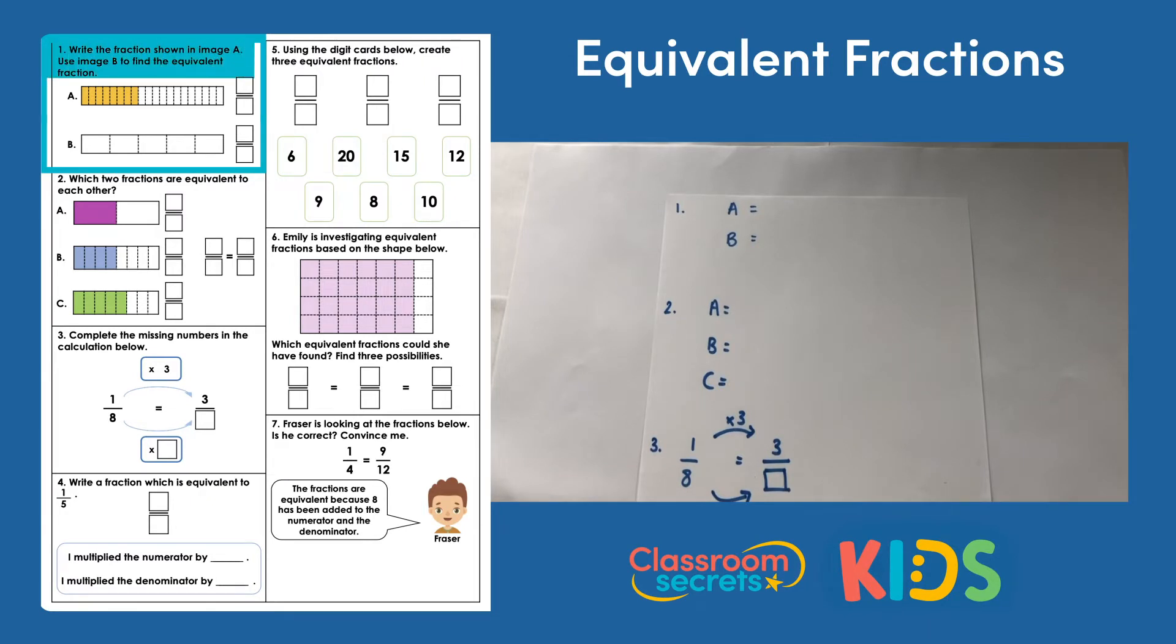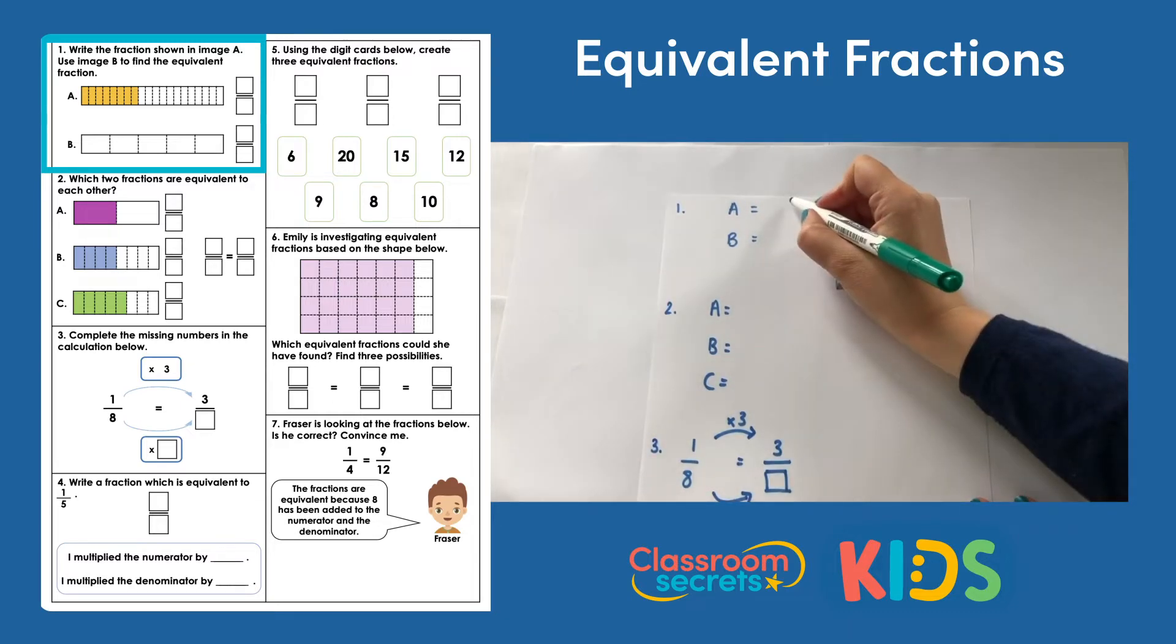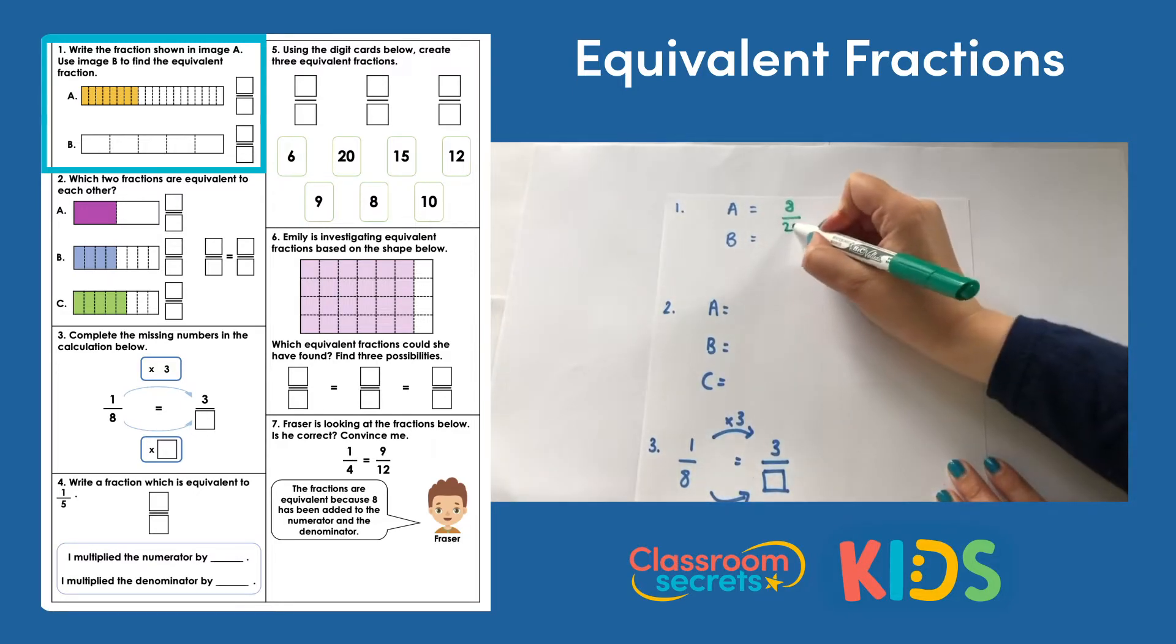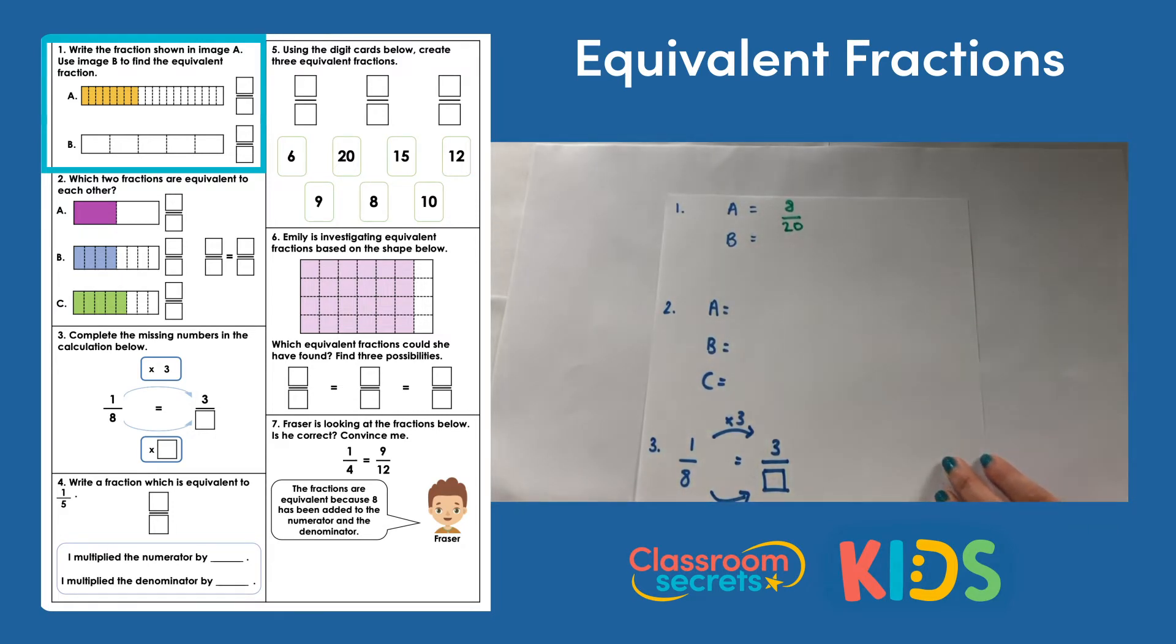Question 1. Write the fraction shown in image A. Use image B to find the equivalent fraction. In image A we need to count the spaces that have been shaded in. I have 8 bits that have been shaded in and then we need to know how many that is part of. So how many has the whole been split into? There are 20. So for A we have 8 twentieths.